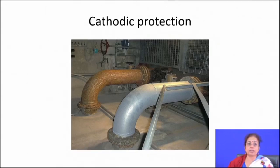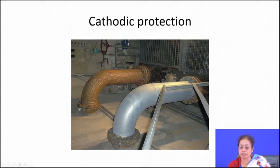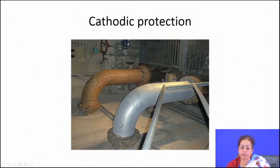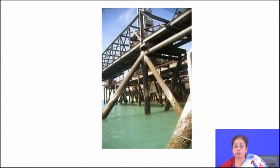This is the typical cathodic protection observed in pipelines. Whenever it is not protected you see a lot of rust, but whenever it is protected by connecting it to typical anodes, you find a lustrous protected surface. This is basically galvanized steel, which protects the surface by two ways: a barrier coating, and sacrificial coating that protects the underlying substrate by cathodic protection.